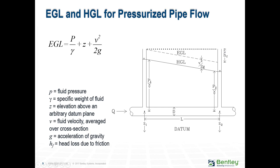It takes energy to move from one point to another because we're fighting against the friction on the pipe. Which is why it's important when you input your pipe properties to input the correct material. There are different methods for calculating those friction head losses, but most of the time that energy is lost due to friction. There's also something called minor losses.